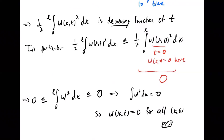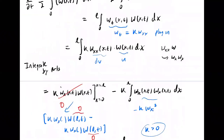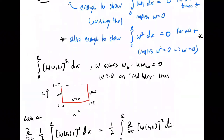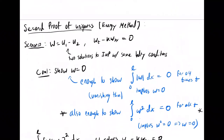By a squeeze theorem argument, this implies the integral of W squared equals zero. And that's what we wanted to show — this implies W of xt is zero for all xt. That's the second proof of the uniqueness result, framed by writing W as the difference of the two functions and using the energy method.